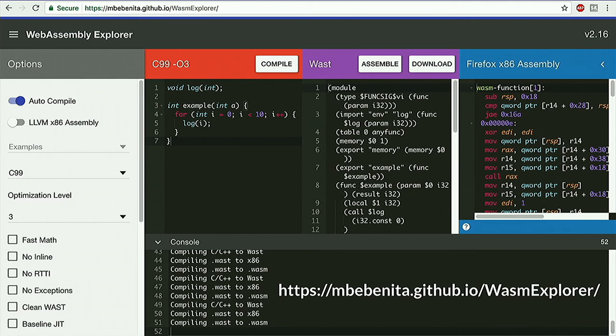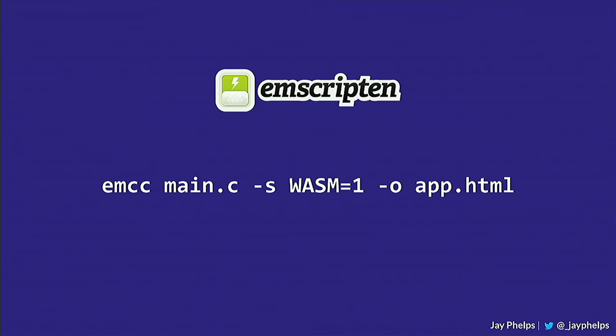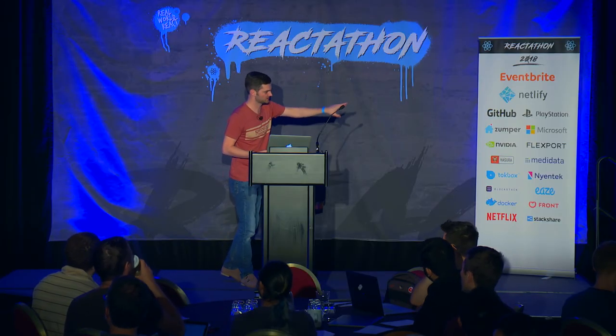Right now, the de facto way of dealing with WebAssembly for the average C++ use case is a project called Emscripten, which is many years old — originally created for the ASM.js project by Mozilla. Its API is very similar to GCC. You pass in the files you want to compile and get a resulting web page. Currently you cannot load a WebAssembly application without some HTML and JavaScript, but in the future you'll be able to load a WebAssembly page without any corresponding JavaScript or HTML.